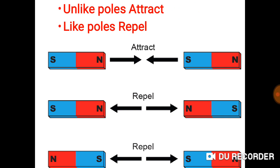Let's take a look at the basic law of magnetism. Unlike poles attract and like poles repel. What do I mean? If you put the north pole of one magnet near the south pole of another magnet, they will pull towards each other. That is, they will attract each other.